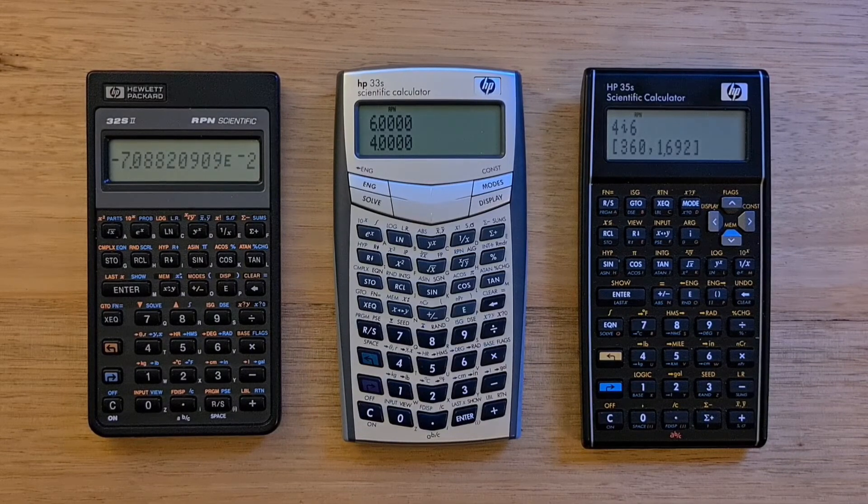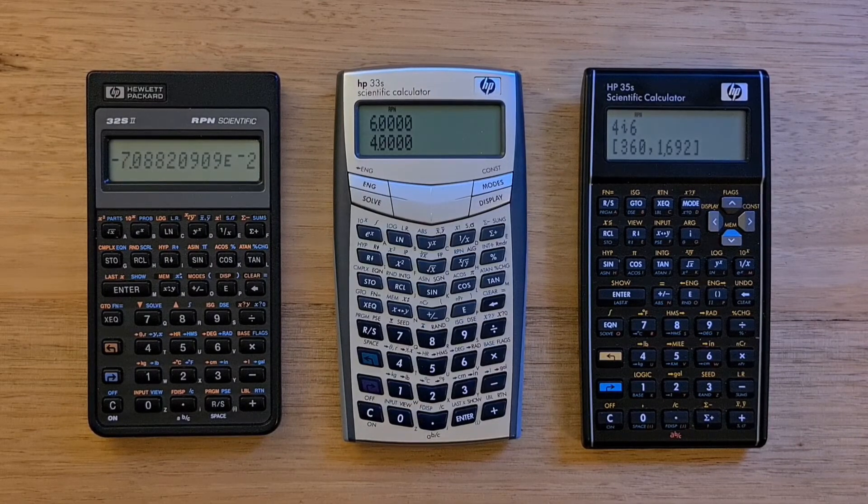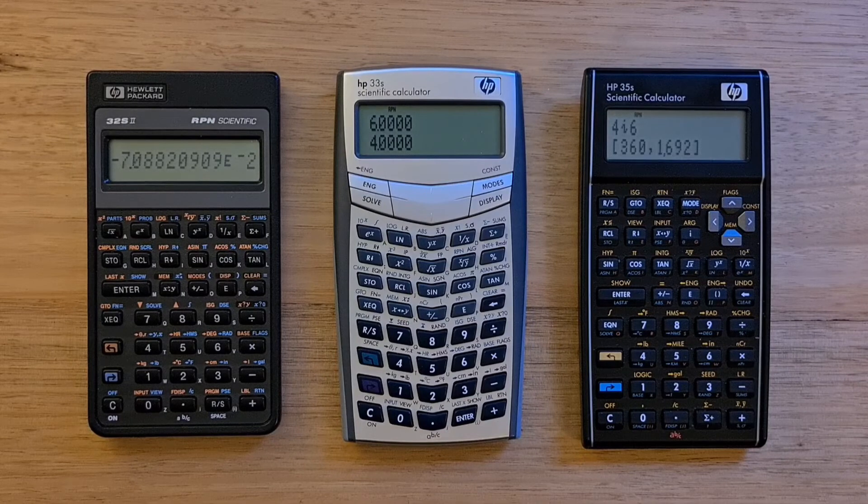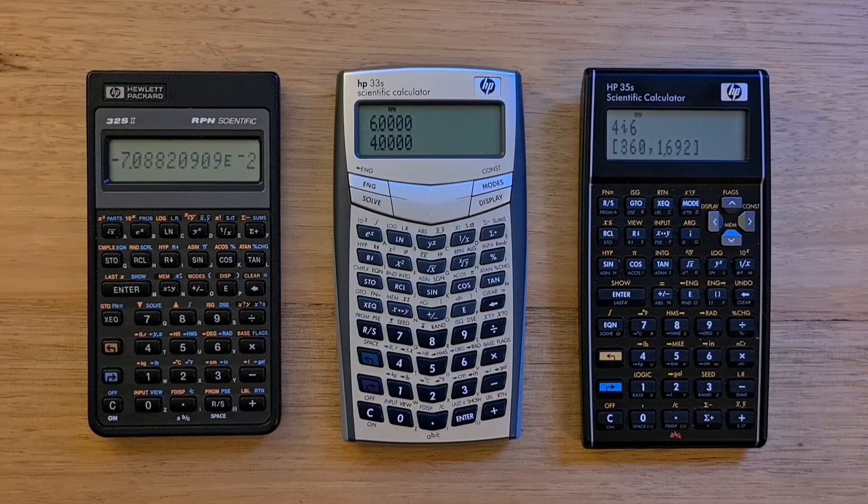Though personally I don't mind the look of the calculator so much as the sloping keyboard. The 33S added algebraic mode, which was an effort to make the calculator appeal to a wider audience. The 35S returned to more of a traditional look and added some nice functionality such as proper complex number and vector support.